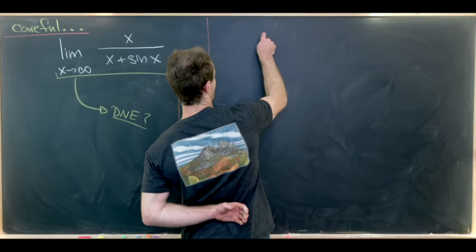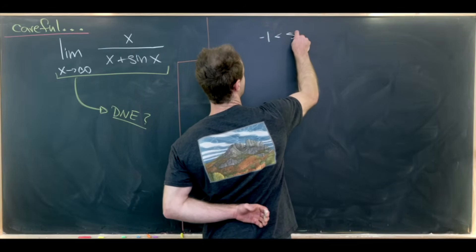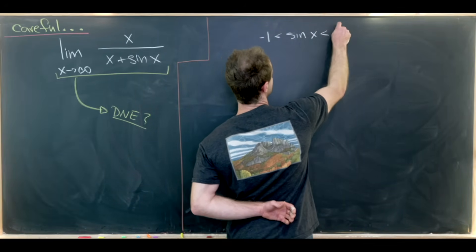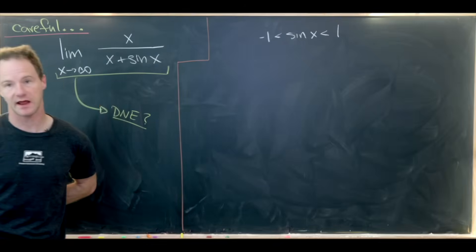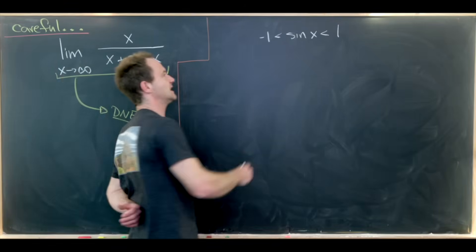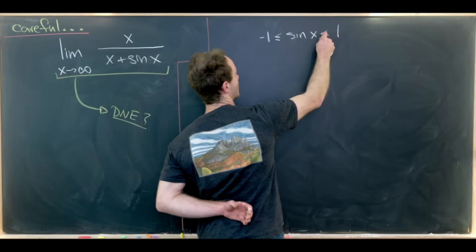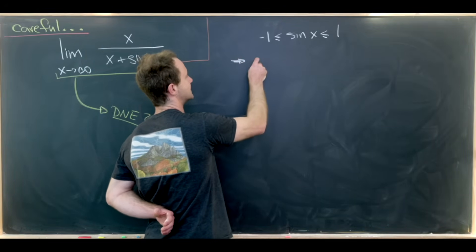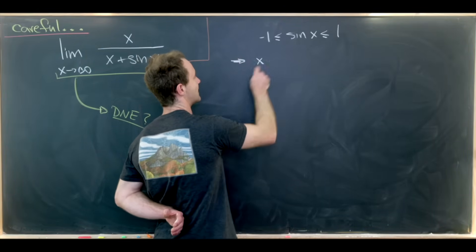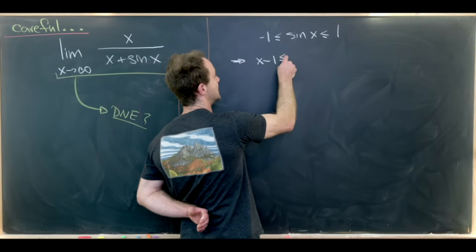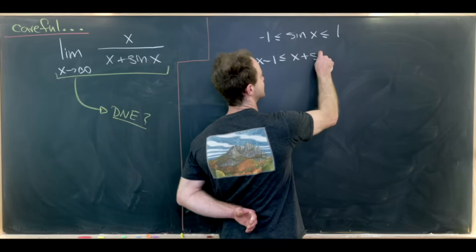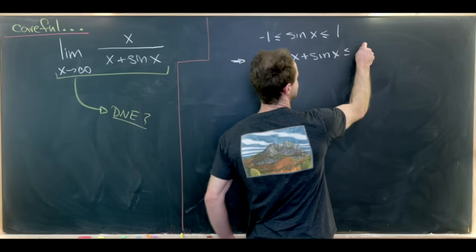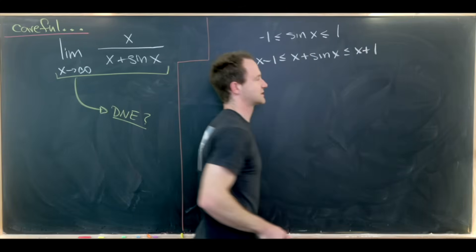So I'm going to start with the following inequality. We know that the sine function is most definitely between negative 1 and 1. Maybe we could even have a non-strict inequality here if we wanted to. But now we can add x to all parts of this inequality and we'll end up with x minus 1 is less than or equal to x plus sine of x, which is less than or equal to x plus 1.